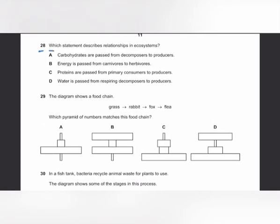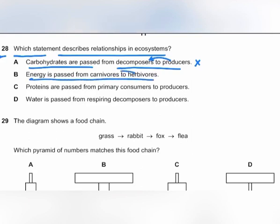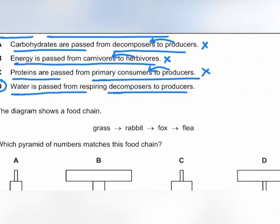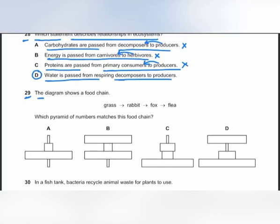MCQ number 28: which statement correctly describes relationships in an ecosystem? Carbohydrates pass from producers to decomposers (not the reverse). Energy passes from herbivores to carnivores (not carnivores to herbivores). Proteins pass from producers to primary consumers (not the reverse). Water is passed from respiring decomposers to producers — this is true, because when decomposers respire they produce carbon dioxide and water, and this water can be absorbed by plants for photosynthesis.